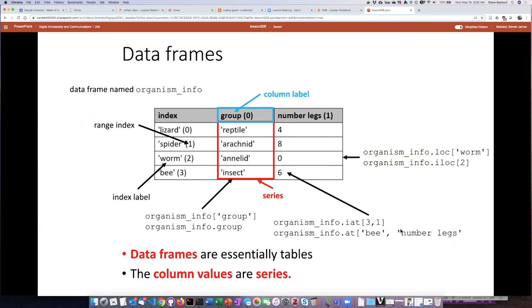And then I can refer to a particular cell like this one here using dot iat if I want to list the row comma column or using the at system if I want to refer to it by the row label and the column label.